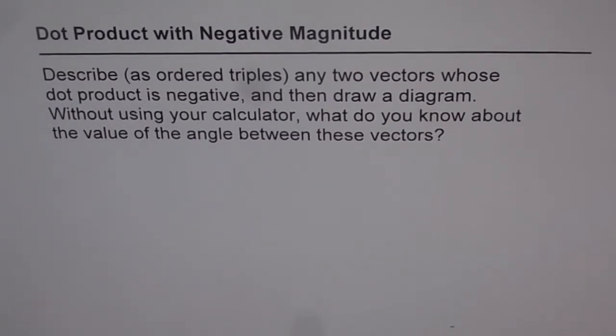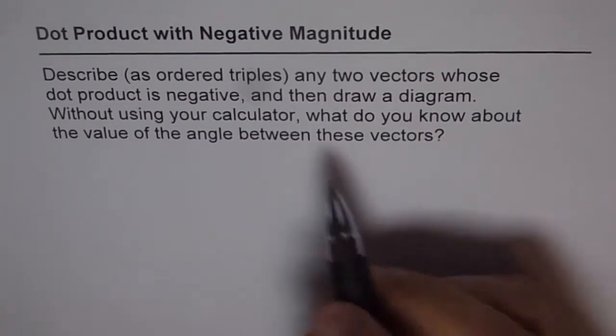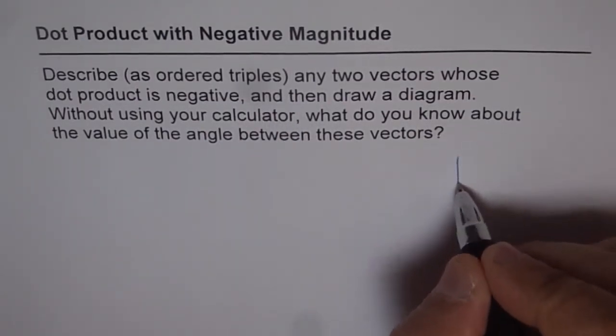Now these are kind of open-ended questions and it's all up to you. You can select any two vectors, and my suggestion is to do the best by selecting the most simplest of all. Ordered triple means space R3.